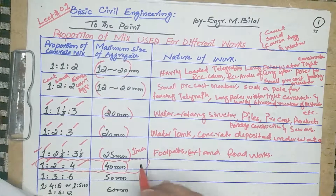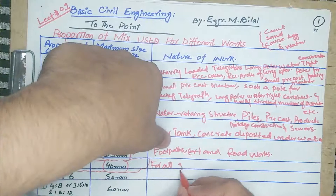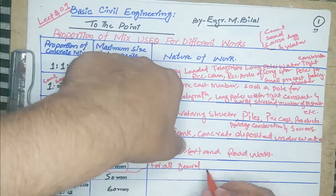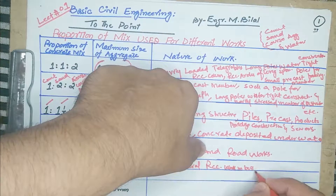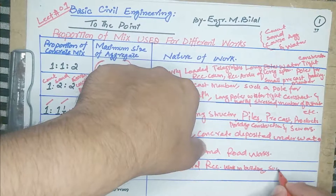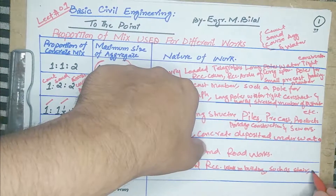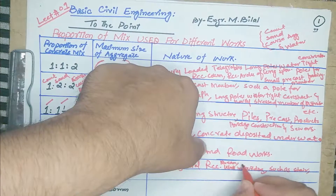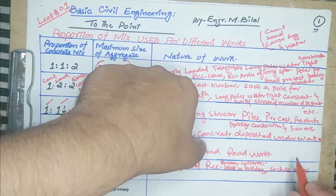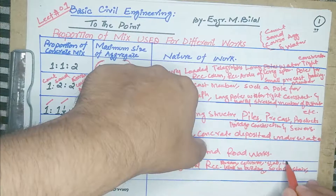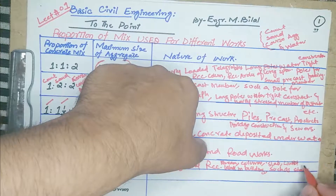This type of concrete is used for all general RCC work in buildings, such as stairs, beams, columns, slabs, lintels, and foundations.